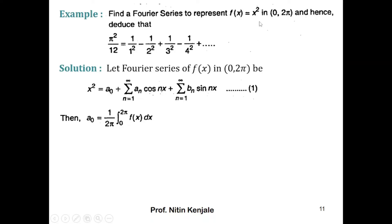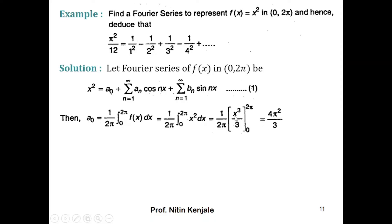Substituting f(x) = x², we get a₀ = (1/2π) × integral of x² dx from 0 to 2π. Evaluating this integral gives (1/2π) × [x³/3] from 0 to 2π. Substituting the limits, we get (1/2π) × (8π³/3 − 0), which simplifies to a₀ = 4π²/3. This is the value of a₀.